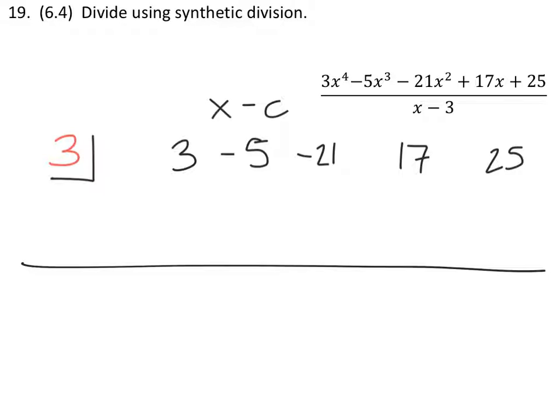And from here we're just going to draw a line down here, and this will give us our new coefficients. So the first number is just going to drop and be 3. The next thing we're going to want to do is to multiply this coefficient 3 by our c value 3, which is 9. And that goes right underneath our next number, which is negative 5. Now that's a positive 9, so we're going to add it, which would give us 4.